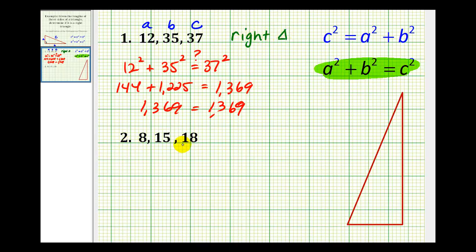Let's look at a second example here. C must be equal to 18, and we can let A equal 8, and B equal 15. The main thing is that C is the longest side. So we want to test to see if 8 squared plus 15 squared equals 18 squared.